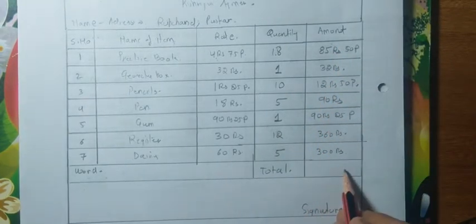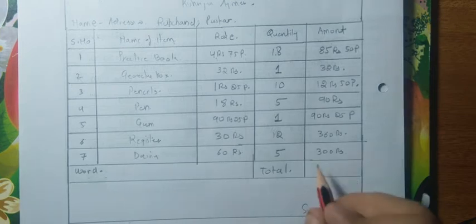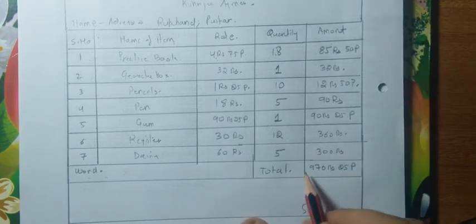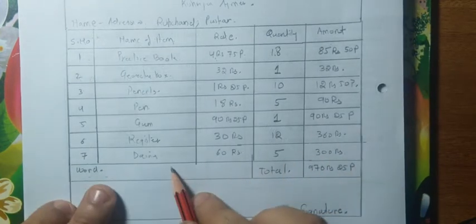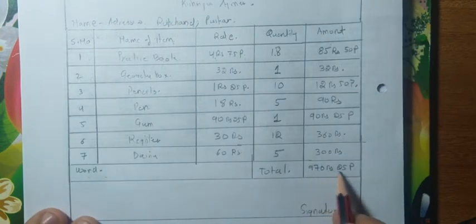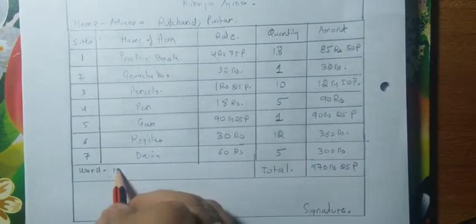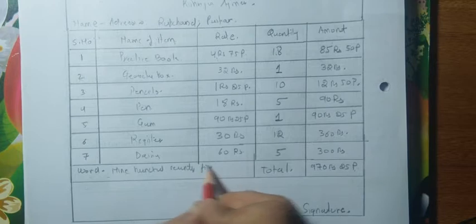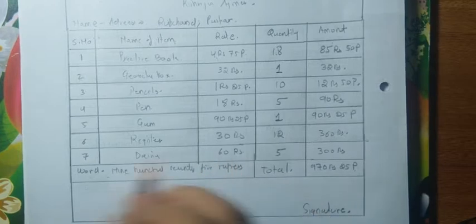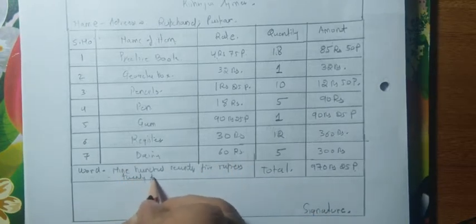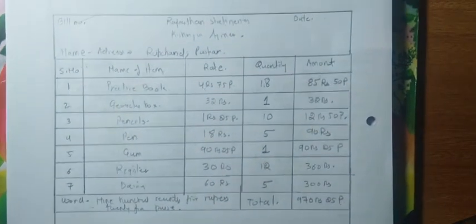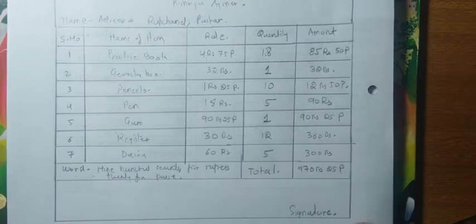And 60 rupees × 5 = 300 rupees. Now we add all these amounts together to get the grand total, which comes to 970 rupees 25 paise. This total amount we write in word form at the bottom. So we write: nine hundred seventy rupees and twenty-five paise. This is your bill complete.